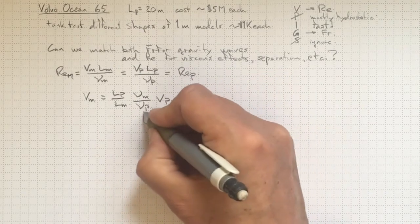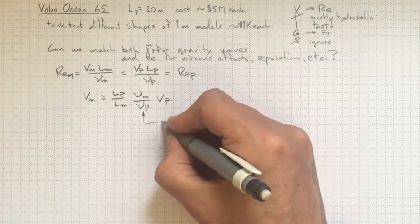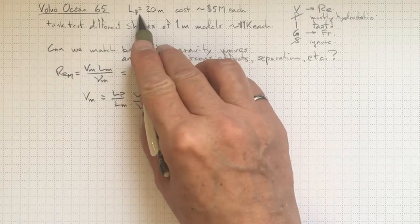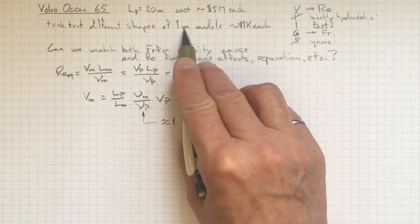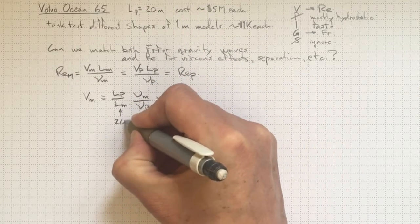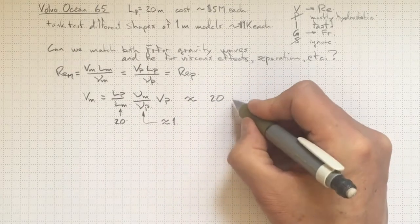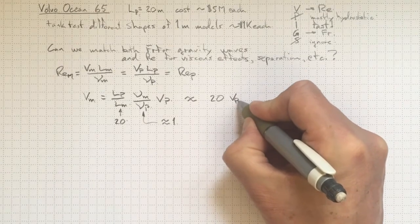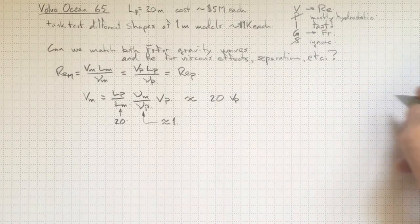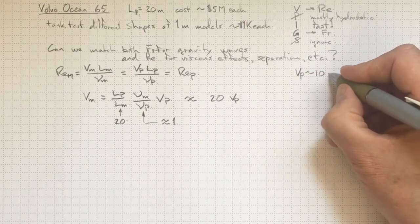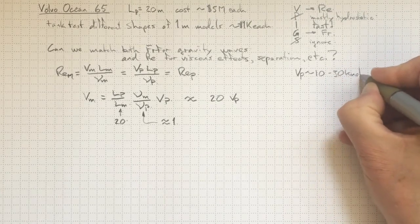So that viscosity is going to be around one if we are working in water. We're not going to get much change between the model conditions and the prototype conditions. The length of the prototype is 20 times longer than the length of the model. So as a result, we're going to wind up with about 20 times the velocity of the prototype. Now what is the velocity of the prototype? These things go in our range of interest anyway around 10 to 30 knots.